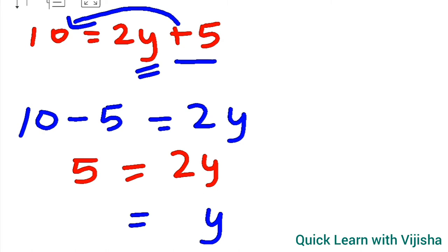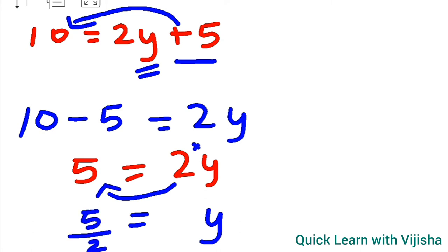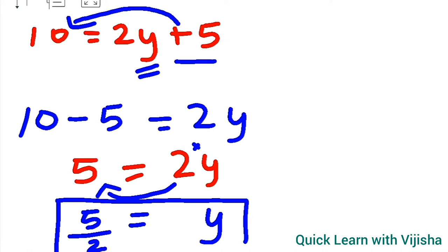We need to find only the value for y. The 2 is in multiplication form, so we take it to the other side as division. This gives y equals 5 upon 2. So the value for y is 5 upon 2.